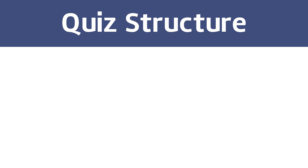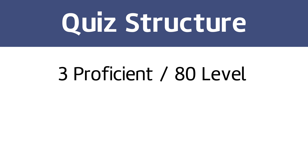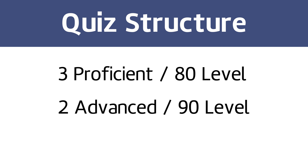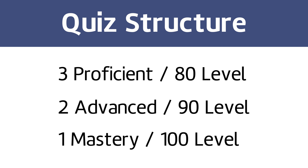Therefore, in order to improve this, I ended up using the following question distribution for each quiz. Every quiz has three proficient level questions, two advanced level questions, and one mastery level question. This is a total of six questions, so it's a small snapshot of their learning, but the progressive difficulty of the questions is also very informative of student understanding. This is the number I landed on after many years, and I think it's a sweet spot for having enough body of work to accurately capture understanding without having too many questions.